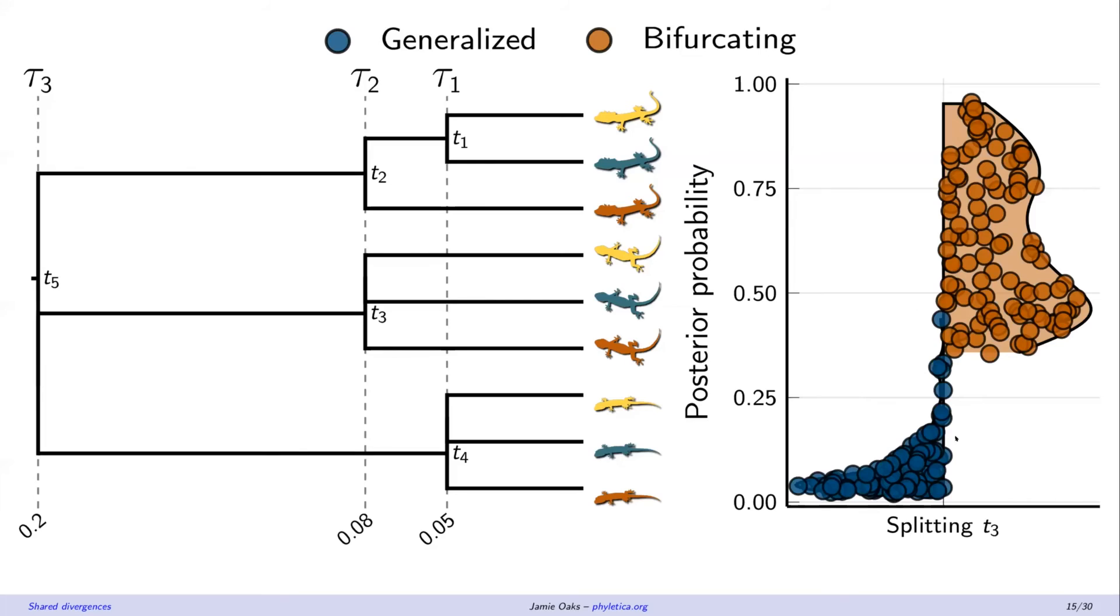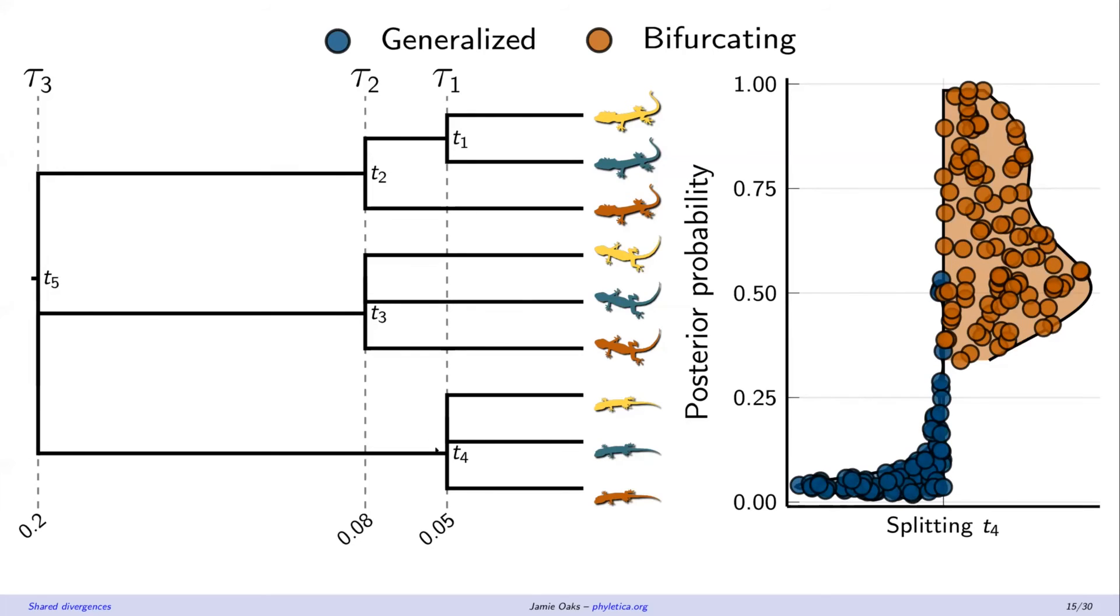So results that were analyzed under the new methods or the generalized distribution method will be in blue. And when the data sets are analyzed under the current independent strictly bifurcating model will be shown in orange. We can see we are much less likely to have spurious support for resolutions of a polytomy.